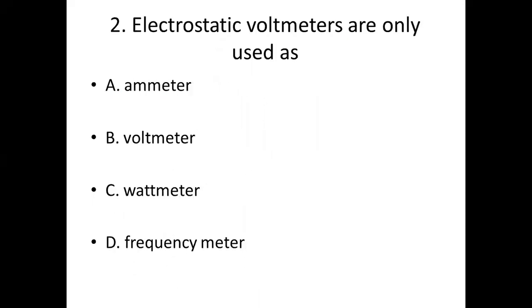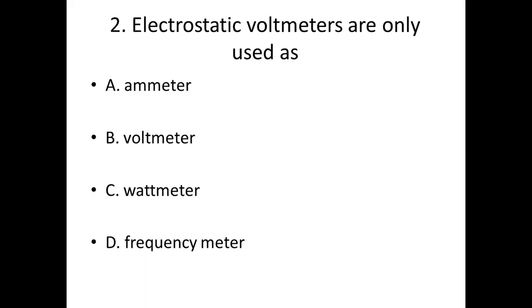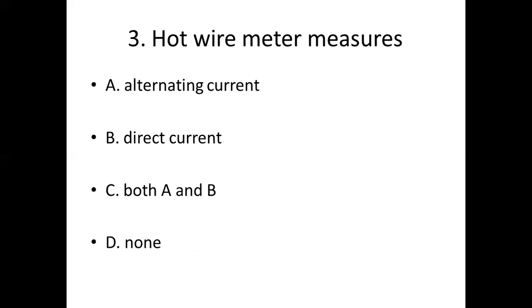Second bit. Electrostatic Voltmeters are only used as: Option A, Emitter. Option B, Voltmeter. Option C, Wattmeter. Option D, Frequency Meter. Answer: Option B, Voltmeter — used as Alternating Current. Option B, Direct Current. Option C, Both A and B. Option D, None.